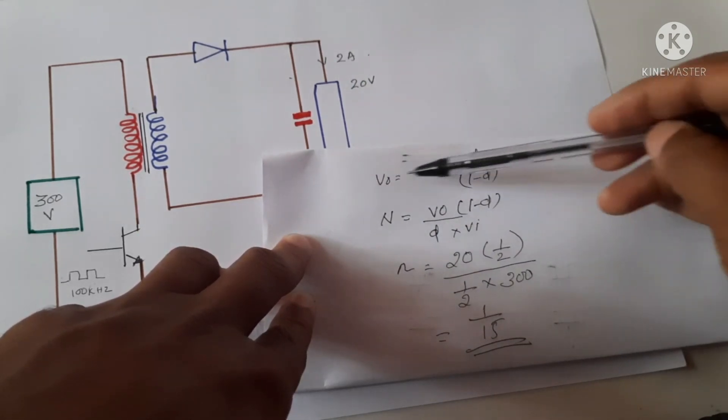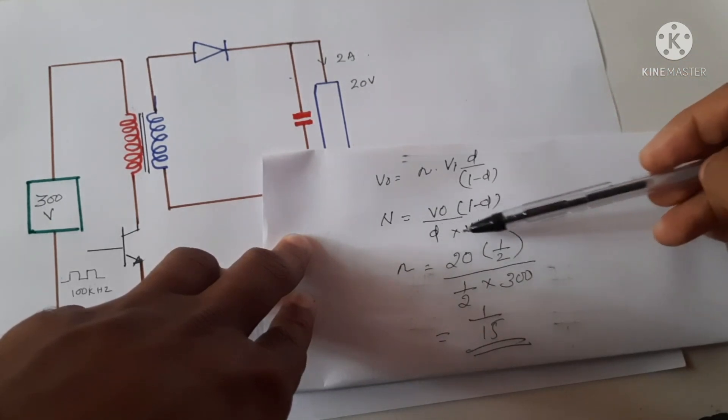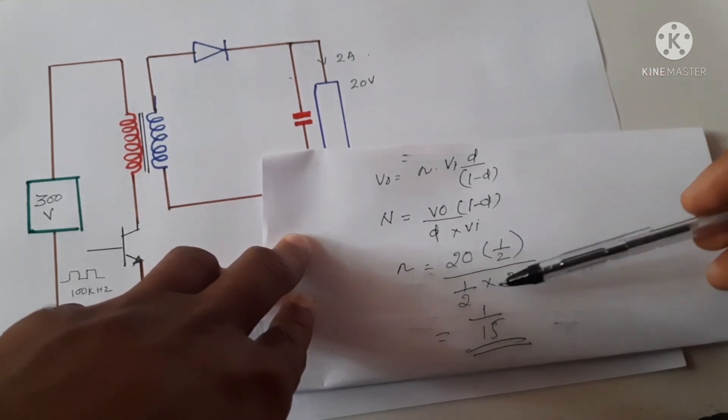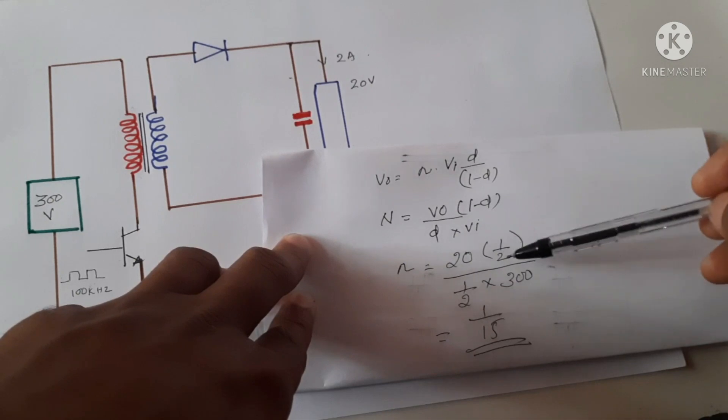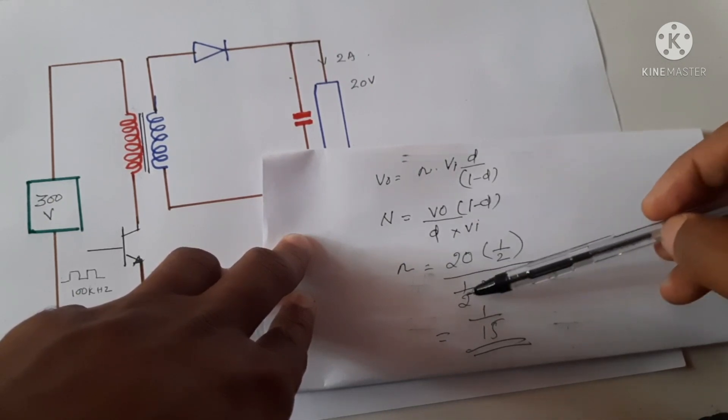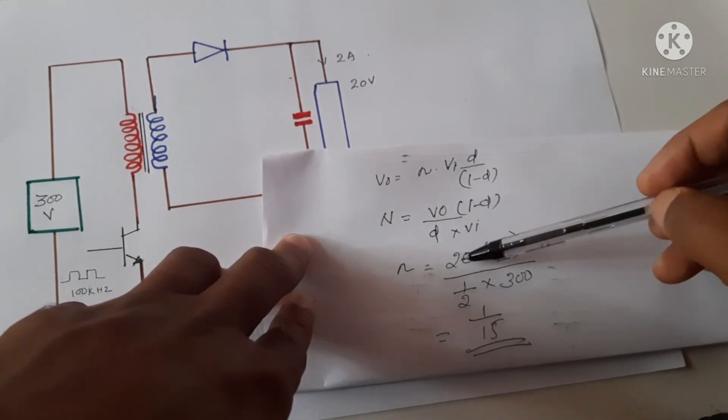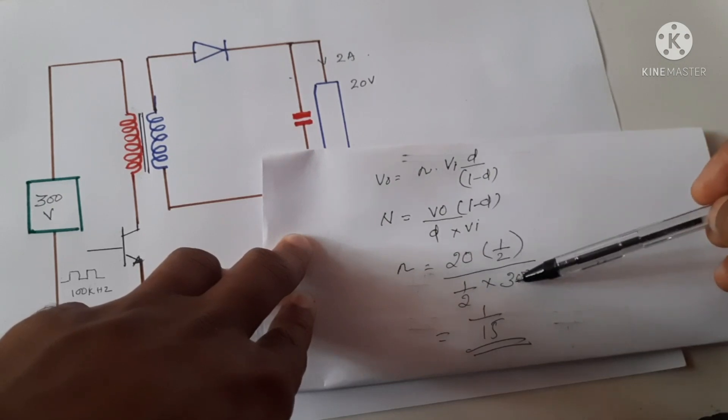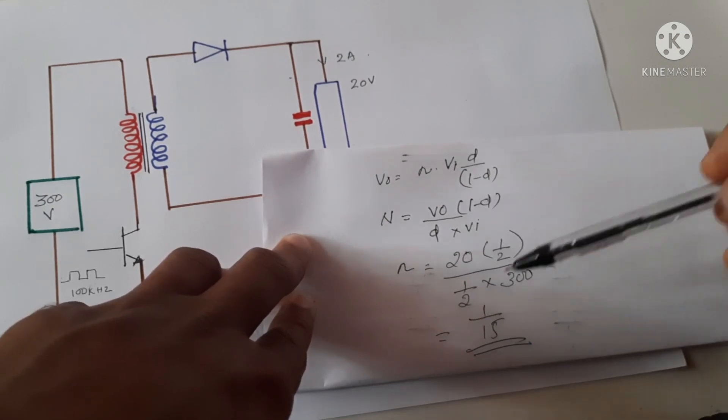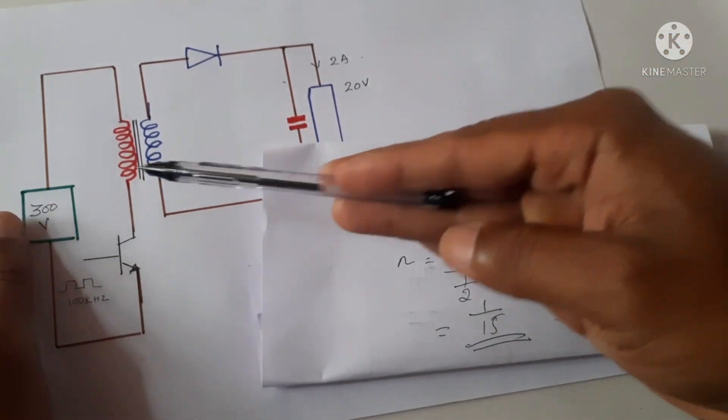If we put all these values, as 1-D and D both are half, this will be cancelled. Then the remaining will be 20 divided by 300, that means 1 by 15. The ratio will be 1 by 15.